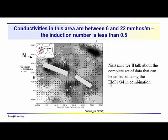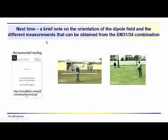So, that gives you, hopefully, a sense of what low induction number is, and when the induction number is too high, what is too high. And too high is going to be somewhere around 0.5 and higher. Okay, well, next time we're going to talk about dipole field orientations and the different measurements that one can obtain using the EM31 and the EM34 together as a total set of measurements. And again, this is just recommended reading. It gives you some background. It's a fairly short technical note, so more on this next time. Thanks for joining us.